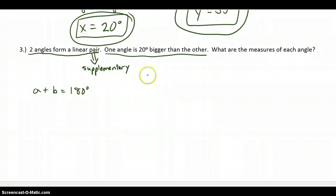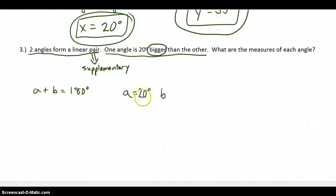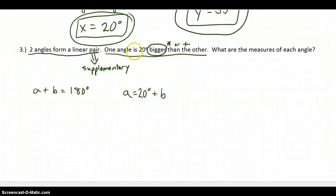From my second sentence, one angle is 20 degrees bigger than the other. I have to convert this to an algebraic equation. One angle — I'll pick A — is 20 degrees bigger than the other angle B. To get bigger, I want to add, not multiply. So the second equation is: A equals 20 degrees plus B.